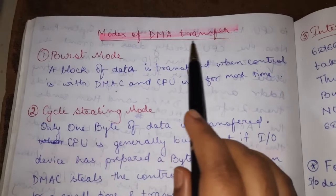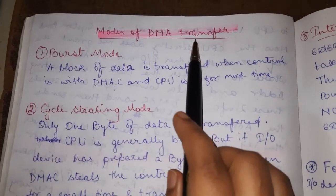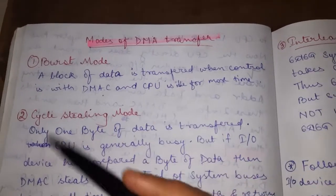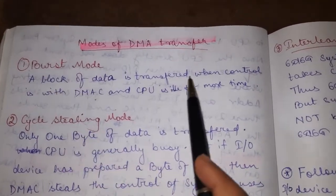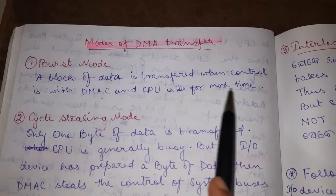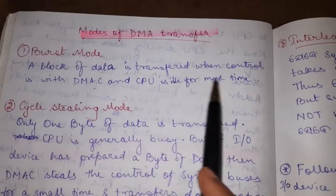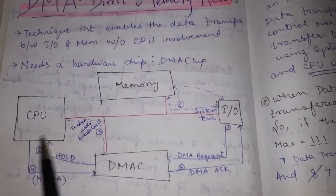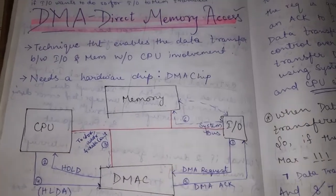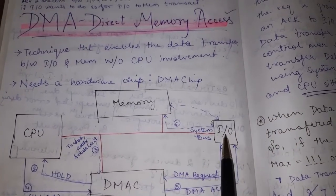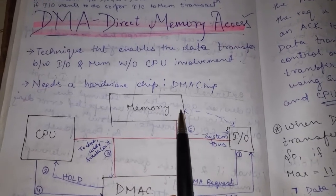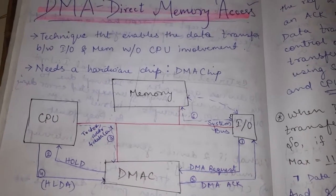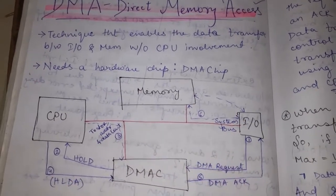In DMA transfer we have three modes: burst mode, cycle stealing mode, and interleaving mode. In burst mode, a block of data is transferred when control is with the DMA and the CPU is idle. When input/output is transferring a large chunk of data, more time is taken for data transfer, so the CPU will sit idle for more time.